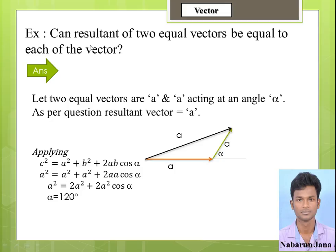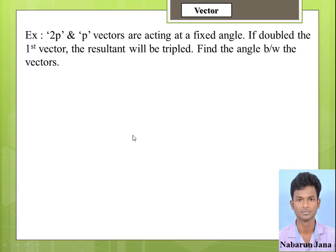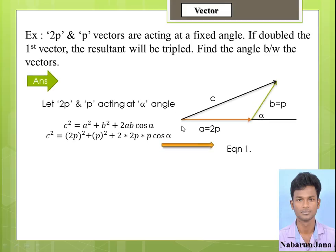So it is possible — the resultant of two equal vectors can be equal to each of them if the angle between the two vectors is 120 degrees. Now another example: let vectors 2p and p act at a fixed angle. If we double the first vector, the resultant is tripled. Find the angle between the vectors. Let vector A = 2p, vector B = p, and the resultant be C. Let the angle between them be alpha.